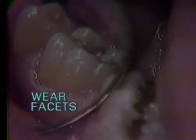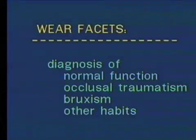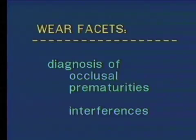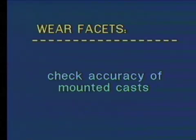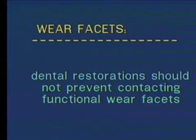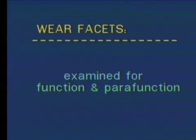Wear facets are flat areas on teeth that are worn smooth by contacts with opposing teeth in function and parafunction. These areas are useful in the diagnosis of normal function, occlusal traumatism, bruxism, and other habits. Occlusal prematurities and interferences can oftentimes be diagnosed by wear facets. The wear facets are useful for checking the accuracy of mounted casts. Although dental restorations should not replace occlusal prematurities and interferences, they should not prevent the patient from contacting functional wear facets. The wear facets should be examined on all the teeth for function and parafunction.